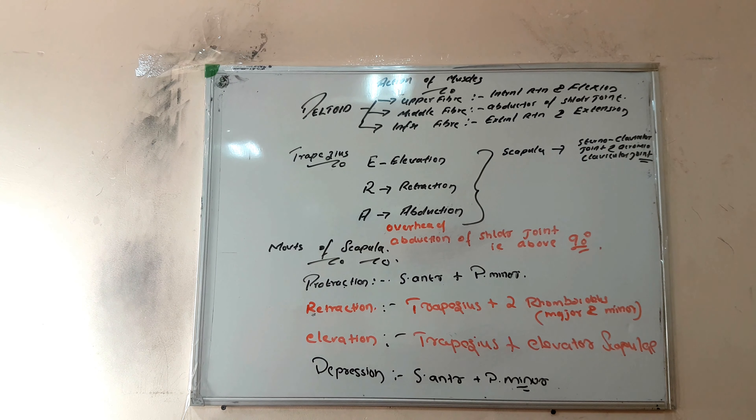For protraction of scapula and depression of scapula, the same muscles are helping - serratus anterior and pectoralis minor. For depression also, it is serratus anterior and pectoralis minor.